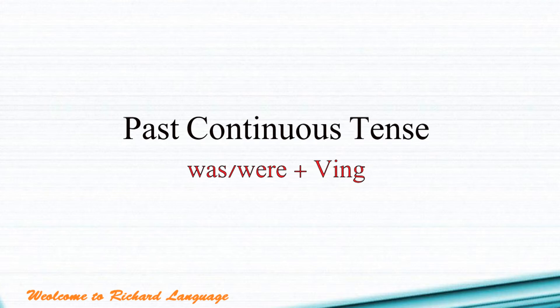The way we use it is: we use the be verb 'was' and 'were' plus V-I-N-G. Once again, we use the past be verb 'was' or 'were' plus V-I-N-G, and the V-I-N-G is the gerund form.